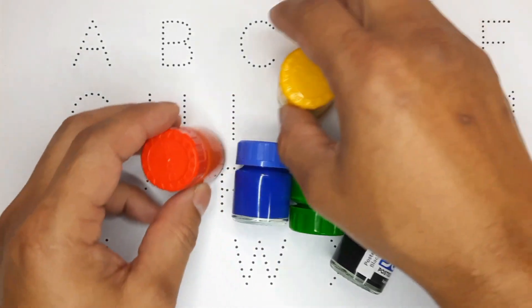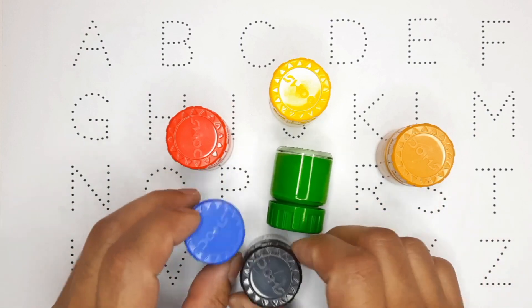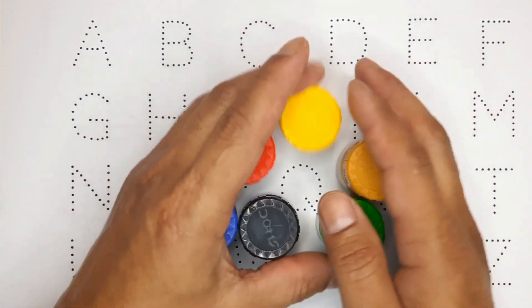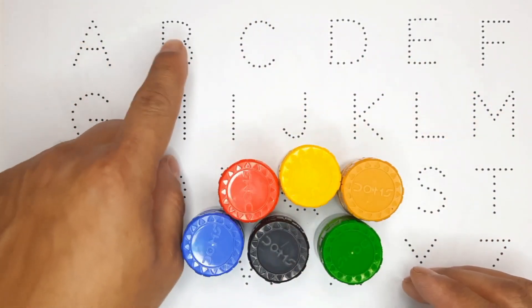Hello kids, welcome to Binakir Show. Today in this video we are going to learn A for Apple, B for Ball, C for Cat.